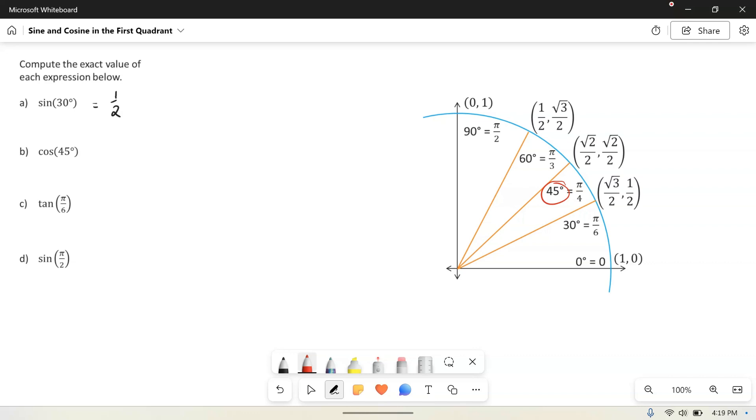For cosine, if you remember, we want the x value. So we are going to say that the cosine of 45 is square root of 2 over 2.